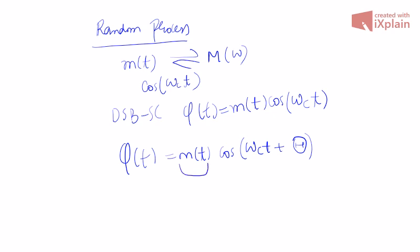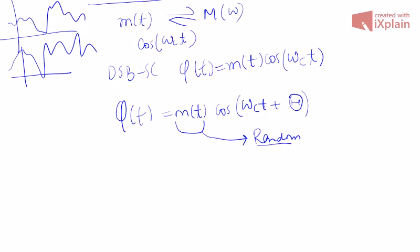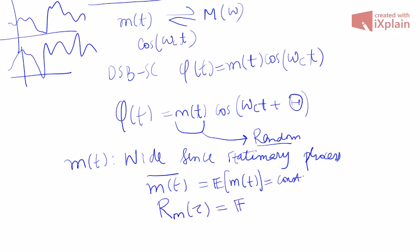To carry out analysis we also assume the source M of T — the signal which we want to model — is random in nature. This is not a bad assumption because audio signals and video signals can well be treated as random processes. We assume they are nice random processes, so we assume that M of T, the message signal process, is a wide-sense stationary process. That means its mean, the expected value of M of T, is constant, and it has some autocorrelation function R_M of tau.